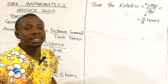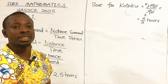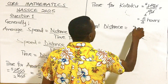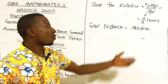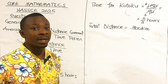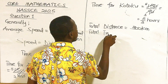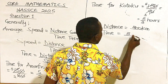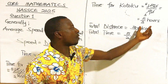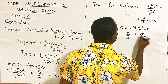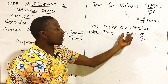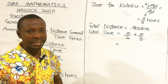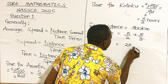The question asks us to calculate the average speed for the entire journey. We need to get our total distance, which from the question is 300 kilometers. We also need the total time: time for Amanfro is 5 over 2, plus time for Kotoku which is 5 over 3, giving us 25 over 6 hours.